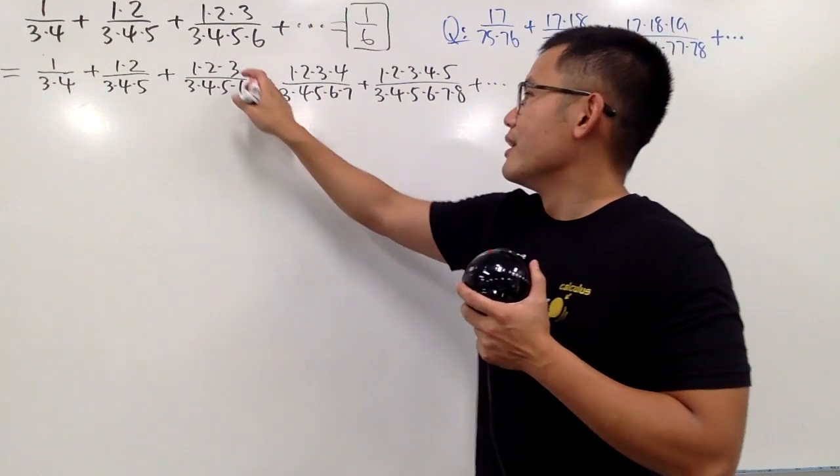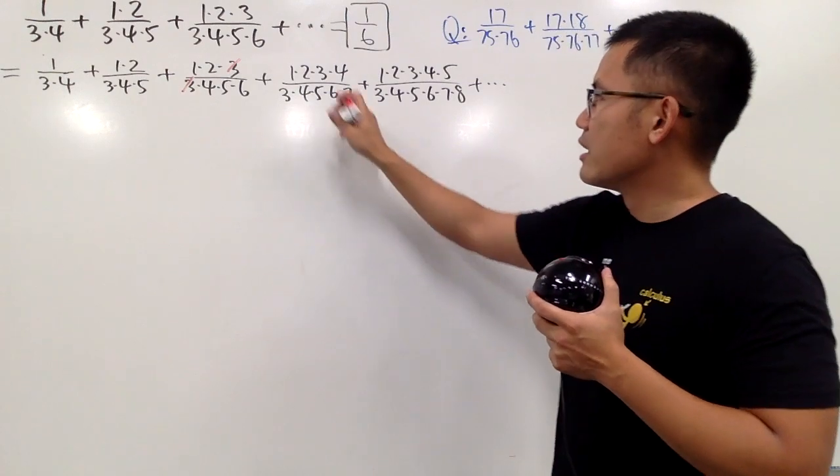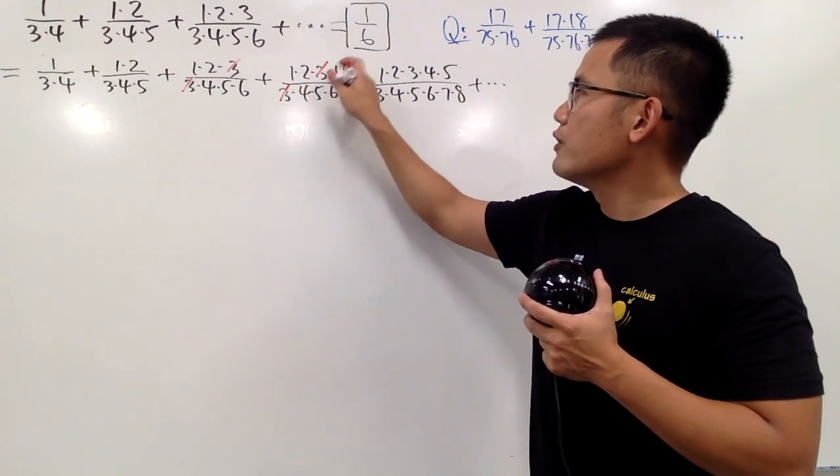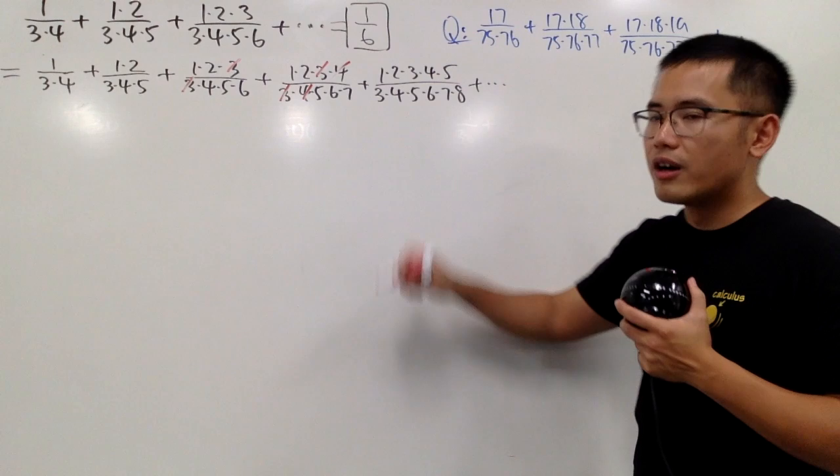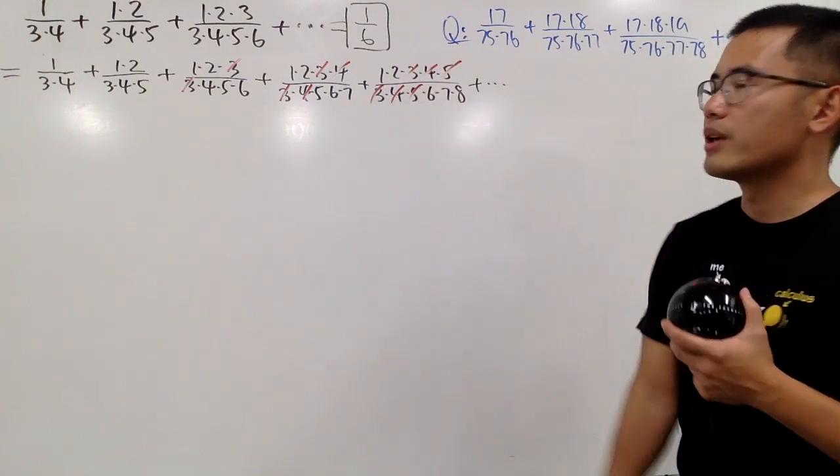The third term and after. We can cancel these three and that. Very nice. Right here. Three and three cancel. Four and four cancel. And right here. We have three, four, five. They'll cancel out.